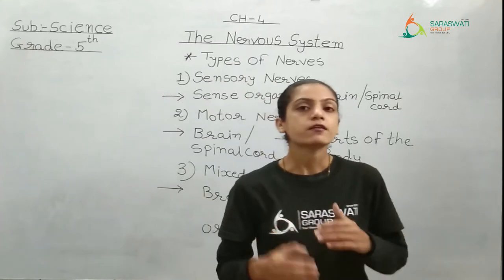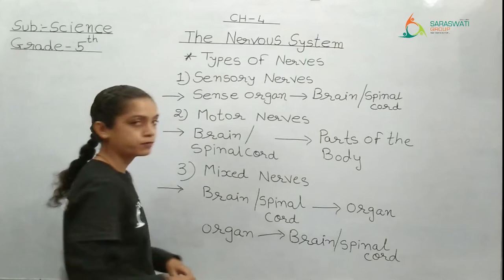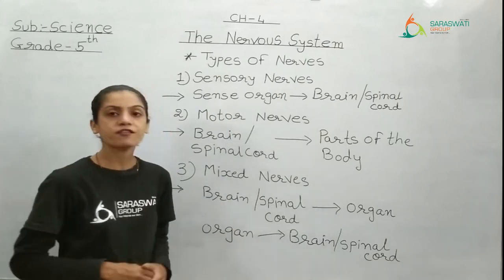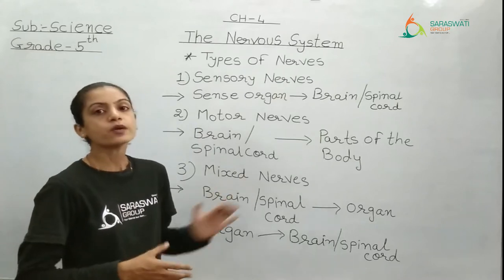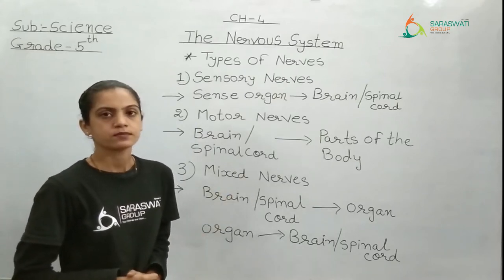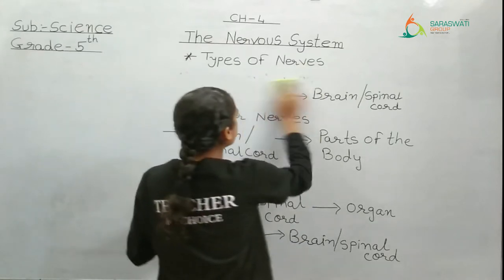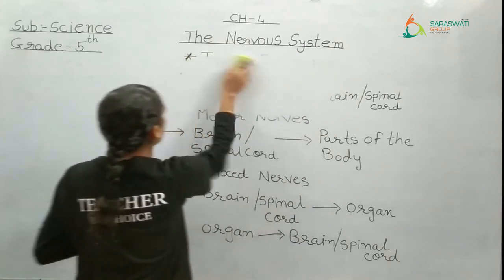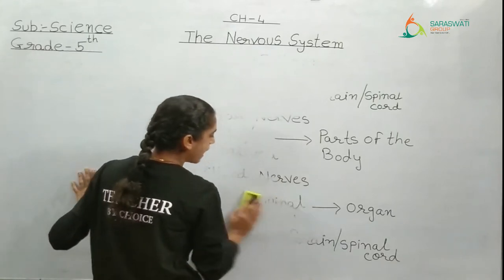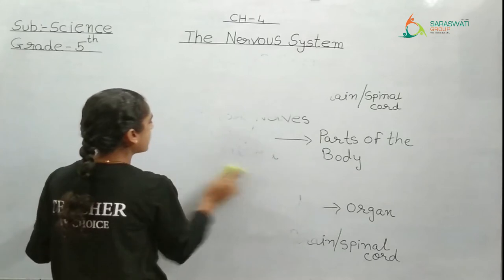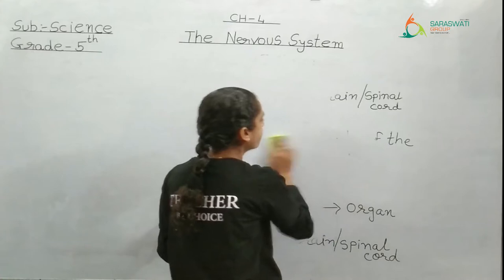After recalling these things, we are moving to the main topic of this chapter. If you want to take a photo of the board, you can, so you can remember it easily for your question answers. After the types of nerves, the next topic — which is related to nerves — is reflex action. Now what do you mean by reflex action? Let me explain you first.